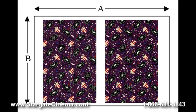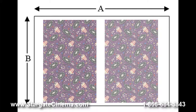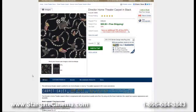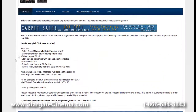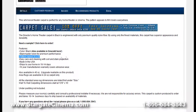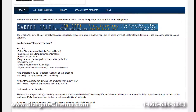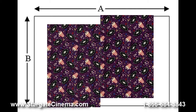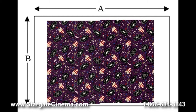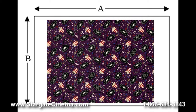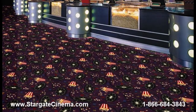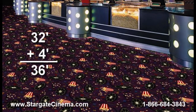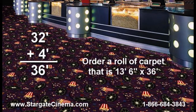Step 2: determine the amount of carpet to add to allow for the pattern repeat. Most of the carpets sold by Stargate Cinema feature intricate designs woven into the carpet. This design is repeated every few feet or inches — how often this design is repeated is called the pattern repeat. The pattern repeat is indicated in the product description of each carpet sold. During installation, the installer will need to match the patterns. We know that the carpet will need to be shifted at most 40.5 inches to match this pattern. We round this up to the nearest foot, adding four feet to the total length, bringing us to 36 feet.